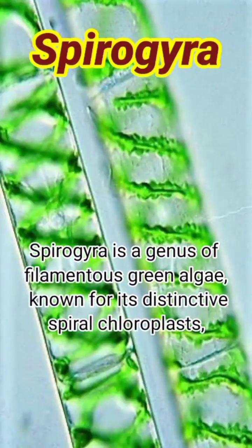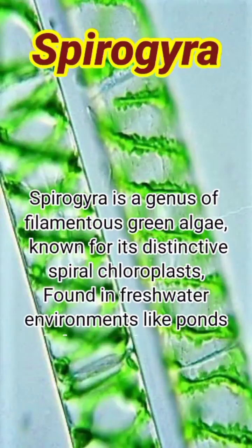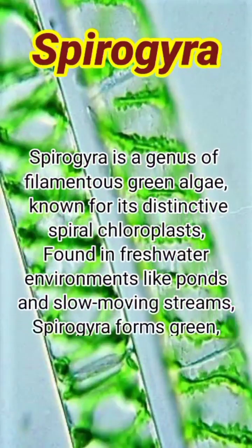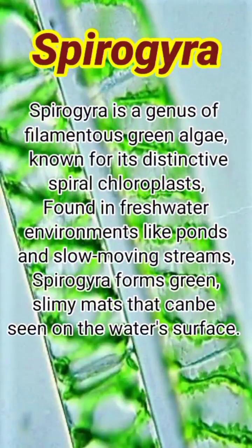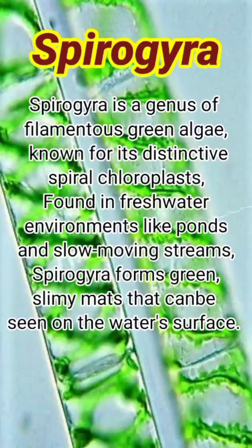Spirogyra is a genus of filamentous green algae, known for its distinctive spiral chloroplasts. Found in freshwater environments like ponds and slow-moving streams, Spirogyra forms green, slimy mats that can be seen on the water's surface.